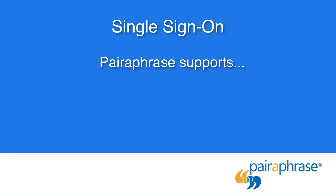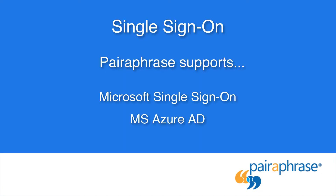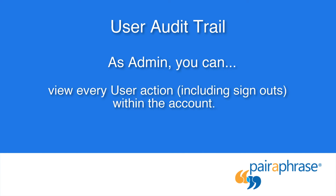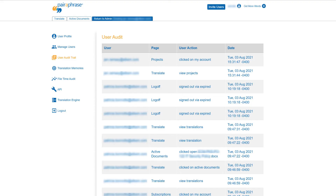Paraphrase not only supports Microsoft Single Sign-on, but also MS Azure AD and Okta. Now we'll move on to the User Audit Trail page. User Audit Trail is another security feature — it allows the administrator to see every user action or sign-out action a user has taken on the account. Auditors can quickly view user actions with timestamps.